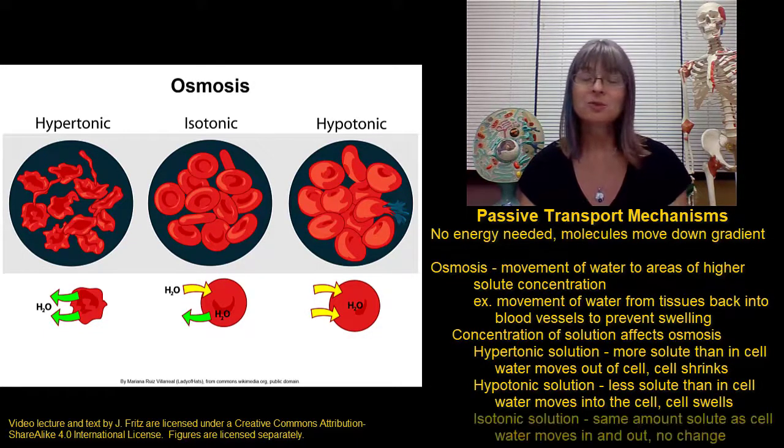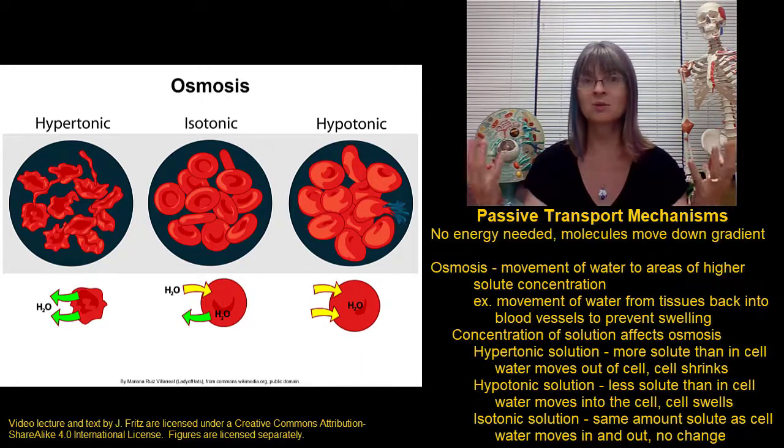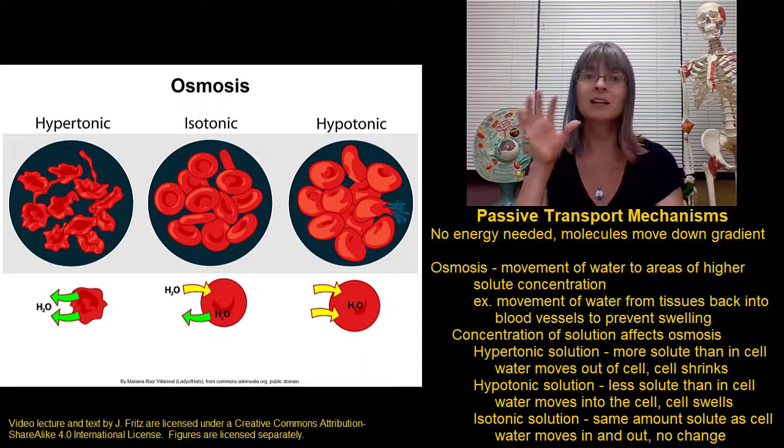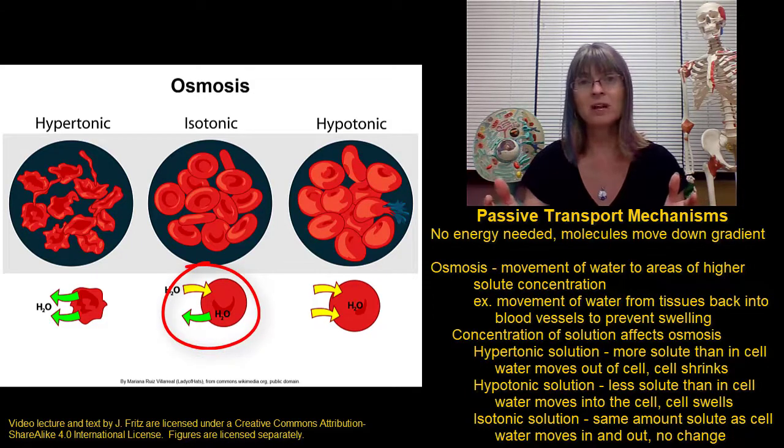The ideal solution for cells is an isotonic solution. In an isotonic solution, there's the same amount of solute in the solution around the cell as there is inside the cell. That means that water moves in and out at the same rate, and we don't have any swelling or shrinking.